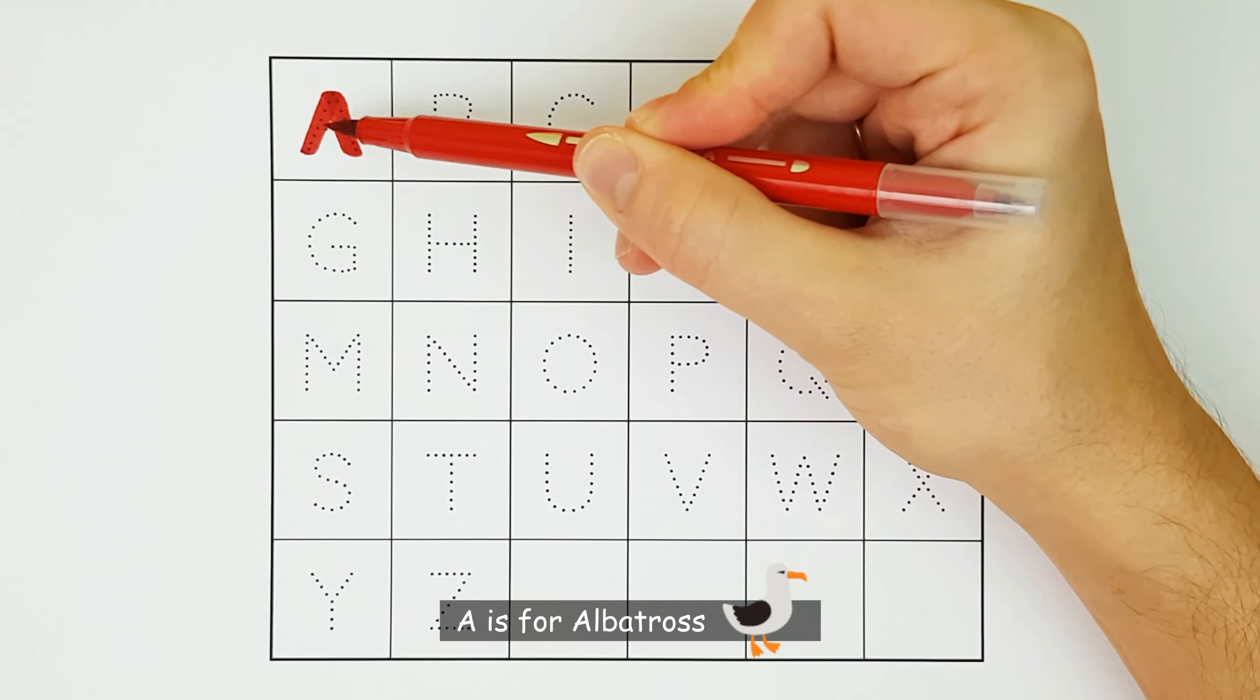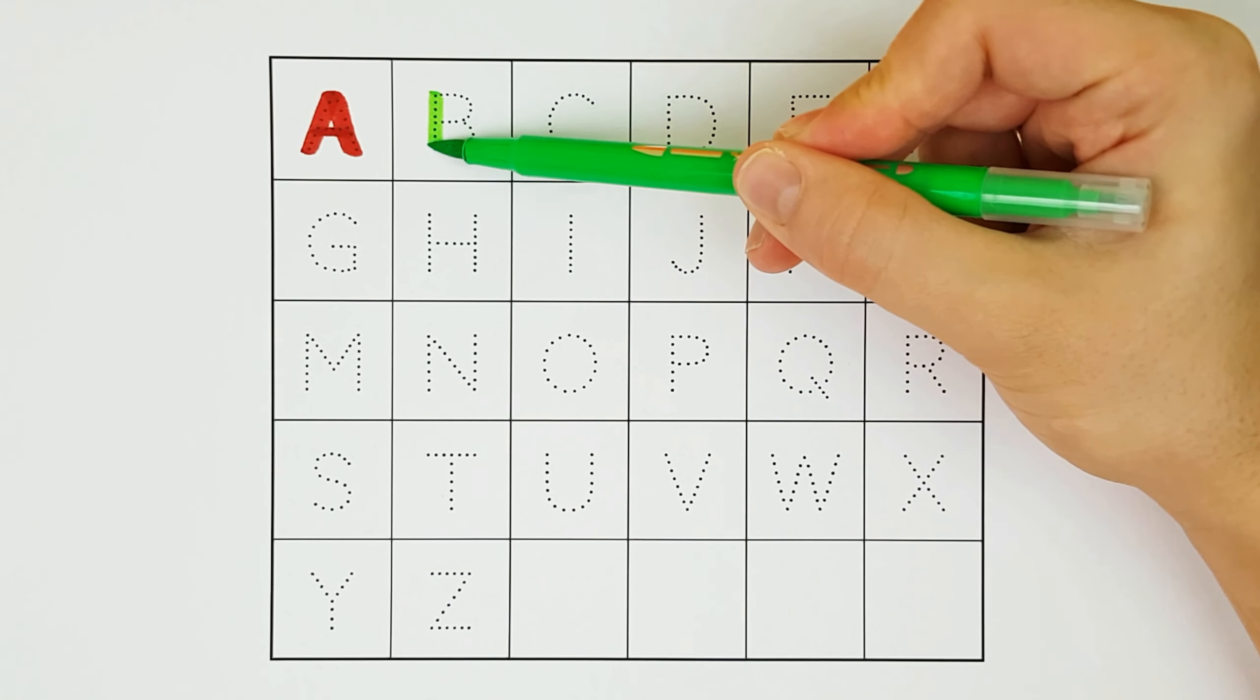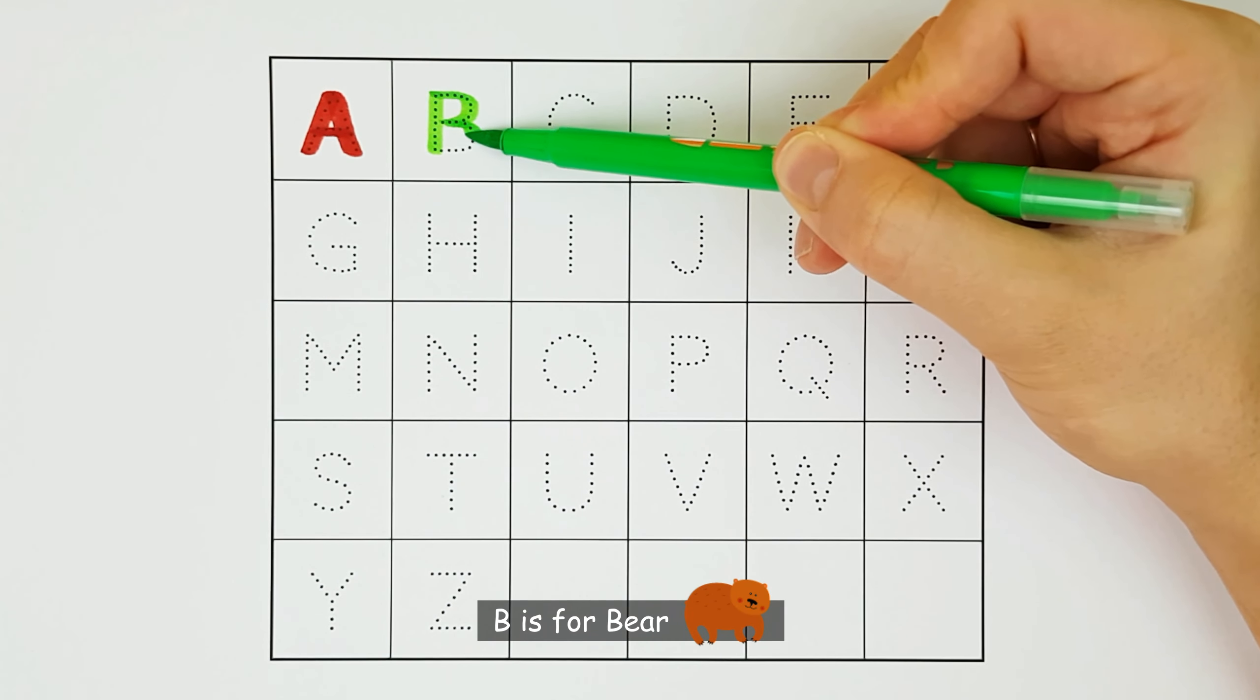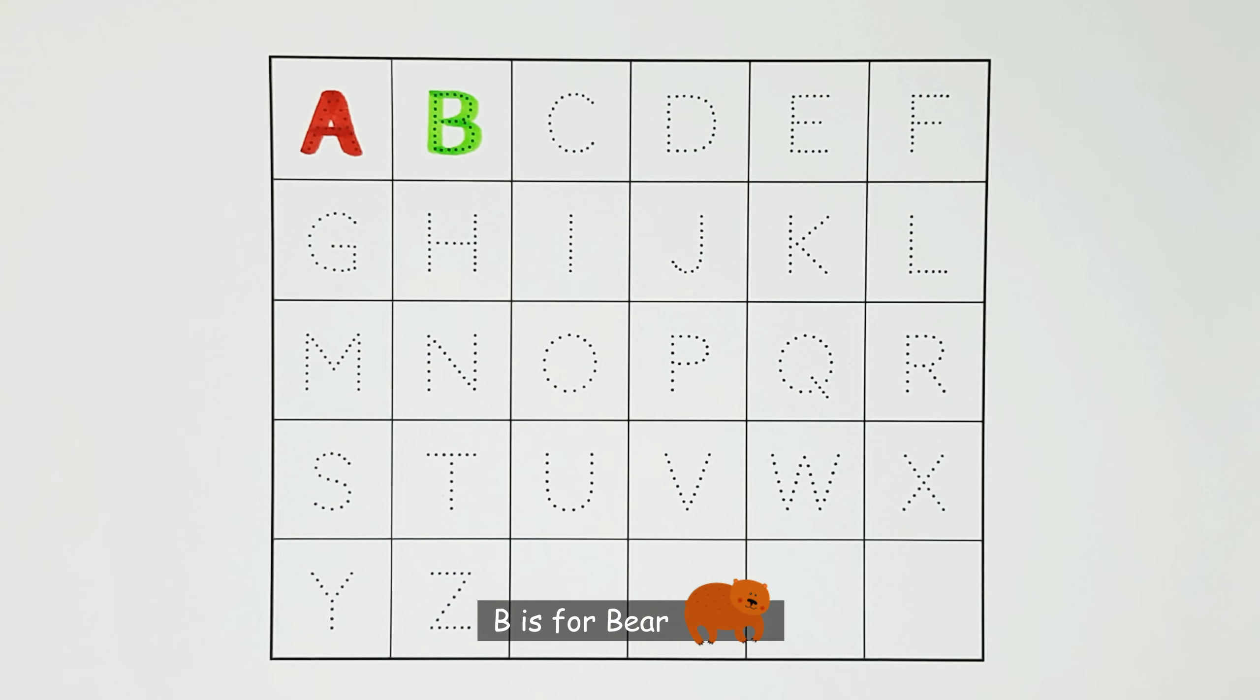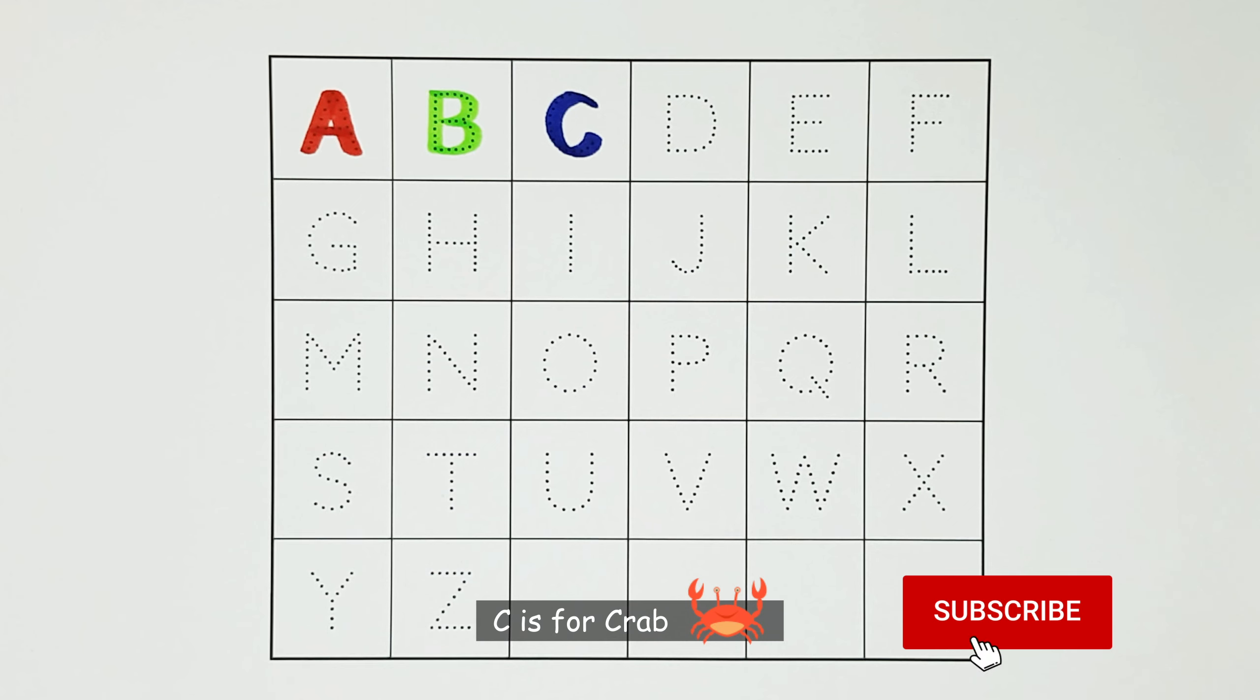A. A is for albatross. A. B. B is for bear. B. C. C is for crab. C.